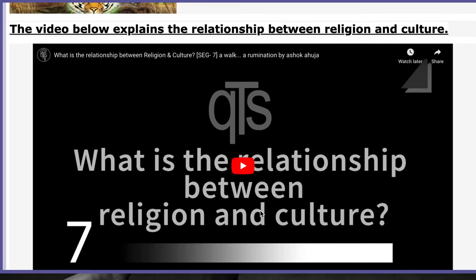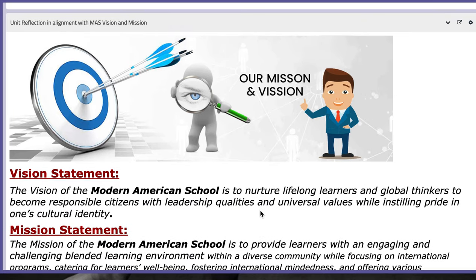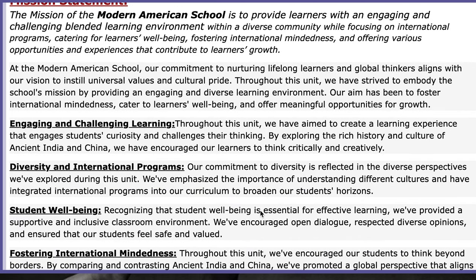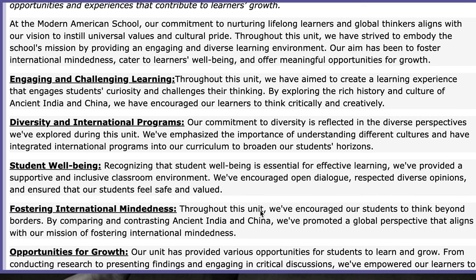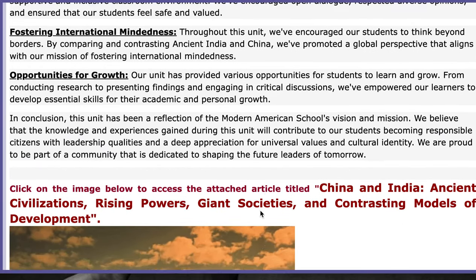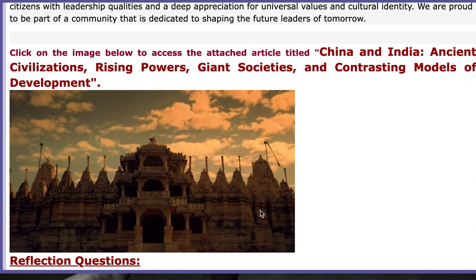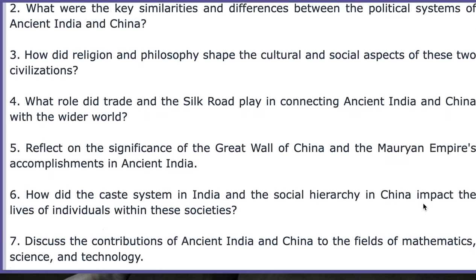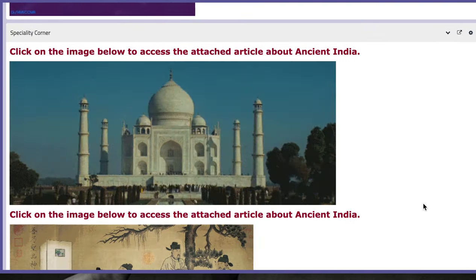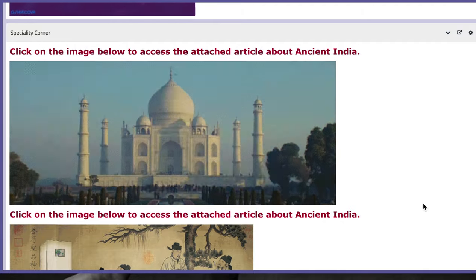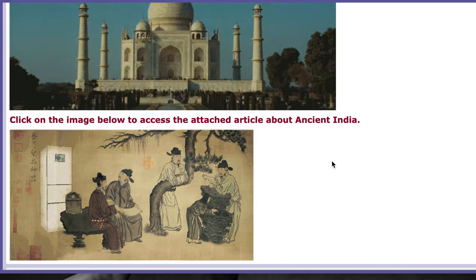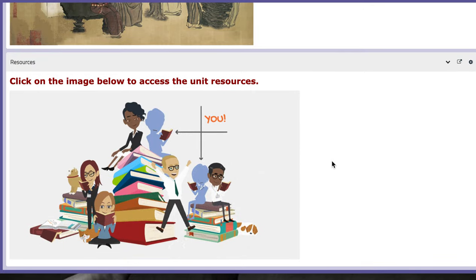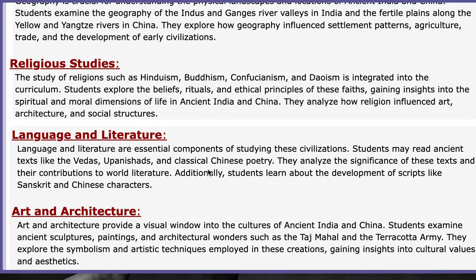There is also a video that briefly explains the relationship between religion and culture to aid you. You have the alignment between the school's vision and mission and the unit, with categories explaining that connection. There is an attached article about China and India along with reflection questions that you will answer at the end of the unit to examine your understanding. The specialty corner includes articles about ancient India and ancient China. Finally, the unit resources — if you click on the image, it will take you directly to the resources aligned to this unit. Thank you so much for listening and have a nice day.